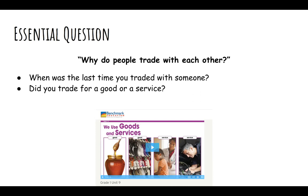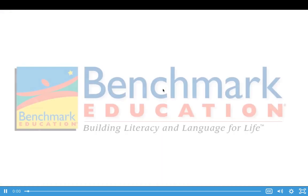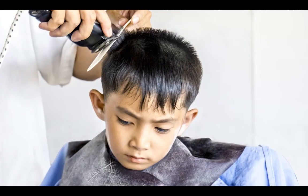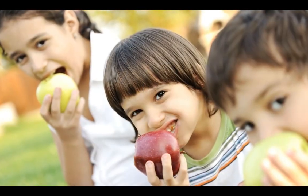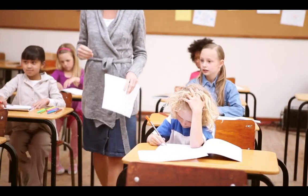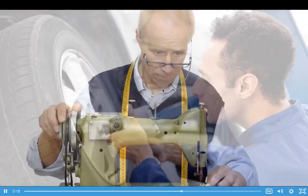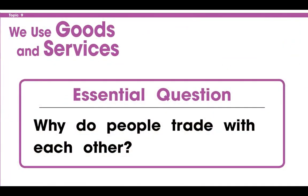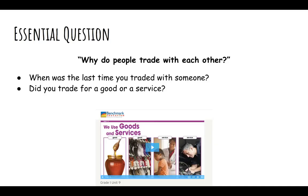I'm going to play our Benchmark video for this unit to keep introducing what we're going to be learning about. People buy goods and services to get what they need and want. The food you eat is a good. Your teacher provides you a service. Each person can make and do some things, but no one can make and do everything. Why do people trade with each other? We will be exploring our essential question as we go through the unit.